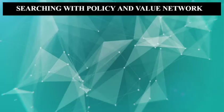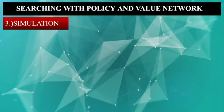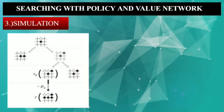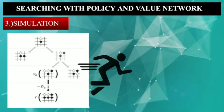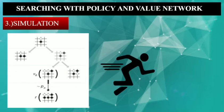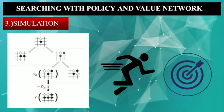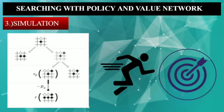The next step is Simulation. From the expanded leaf node, we simulate until the end of the game and check whether we win or lose. Here we use the Rollout Policy, and you know that the Rollout Policy was designed to improve speed contrary to the accuracy of the SL Policy Network.